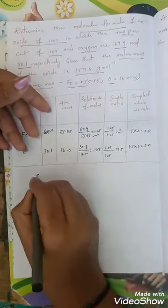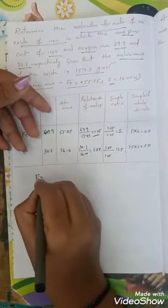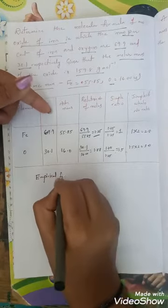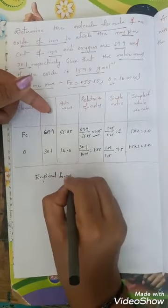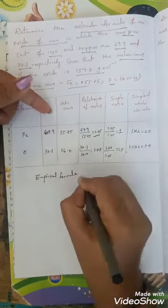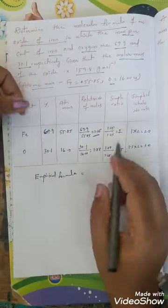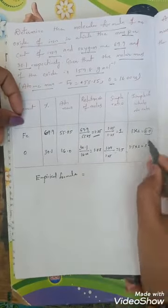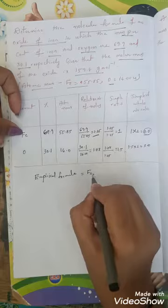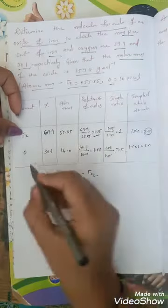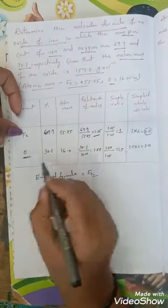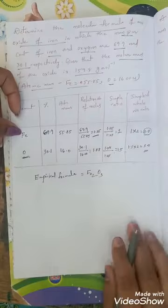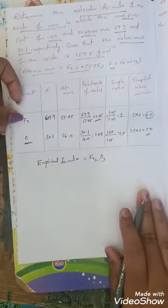Now write the empirical formula. So the empirical formula for the oxide of iron is: how many irons are there? 2. So write Fe2. And oxygens are 3. So Fe2O3 is the empirical formula.